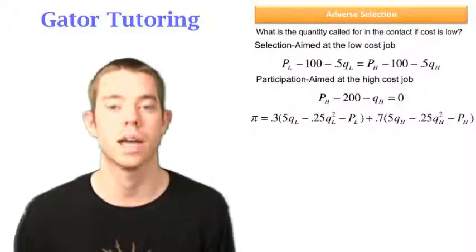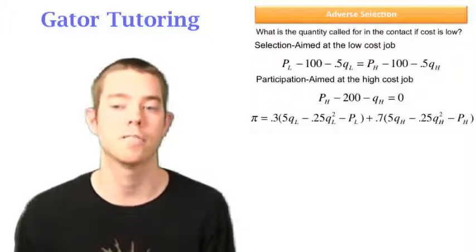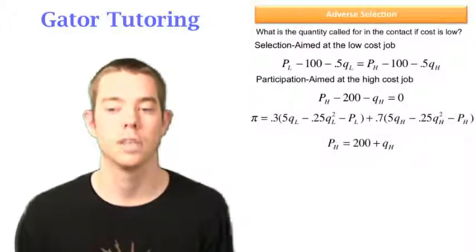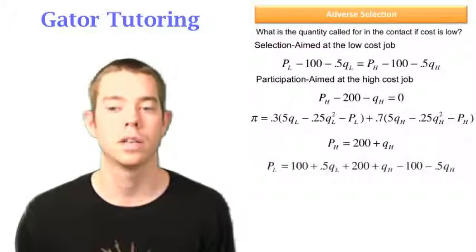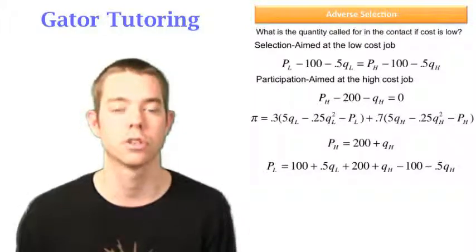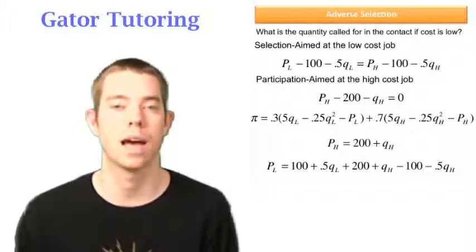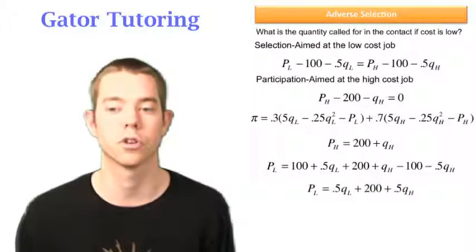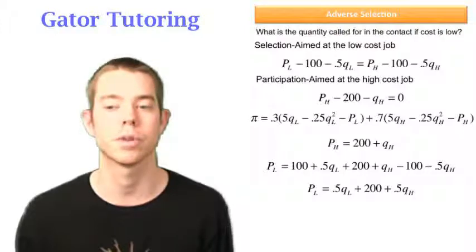So from here, we notice that we have some QLs and some QHs, but we also have PL and PH, and that's what we need to use the constraints for to substitute in for PL and PH. So we know PH is really equal to 200 plus QH. We can look at our selection constraint and plug in for PH for 200 plus QH, because that's going to enable us to have just QLs and QHs in PL. We can combine like terms and solve this down to get PL equal to .5QL plus 200 plus .5QH.